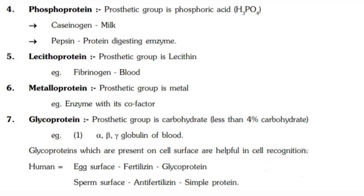Caseinogen is present in milk. Pepsin is a protein-digesting enzyme. Lecithoproteins have lecithin as their prosthetic group — an example is fibrinogen, present in blood. Metalloproteins have a metal ion as their prosthetic group, such as enzymes with a metal cofactor. Glycoproteins have carbohydrate as their prosthetic group, with less than four percent carbohydrate content.